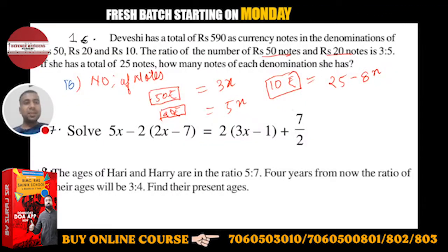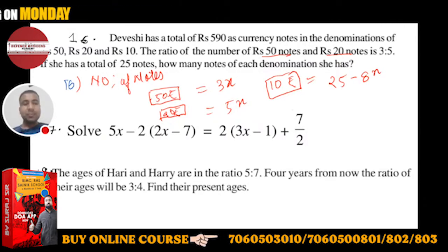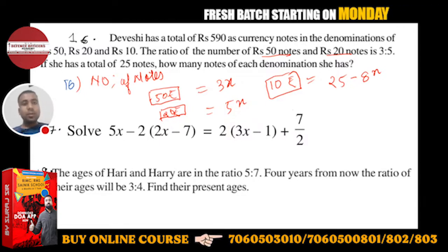Multiply and add, okay. You equate to 590, total is 590. So you have x's value. X's value, tell me how much will come.